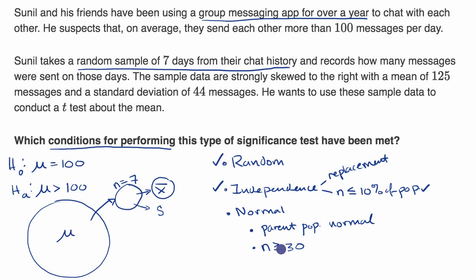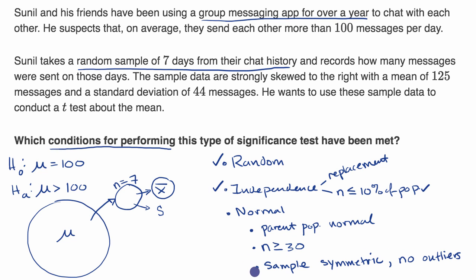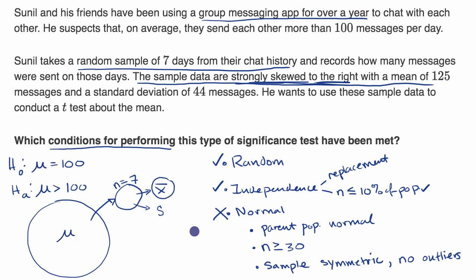The third way we could feel good that our sampling distribution of the sample mean is roughly normal is if our sample is symmetric and there are no outliers, or no significant outliers. Is this the case? The problem states the sample data are strongly skewed to the right — it's clearly not a symmetric sample. So we don't meet any of these sub-conditions for the normal condition, and therefore we do not meet the normal condition for our significance test.